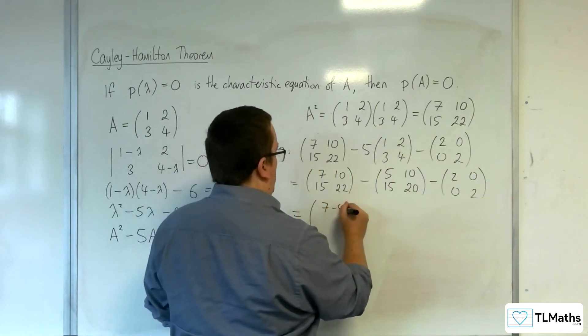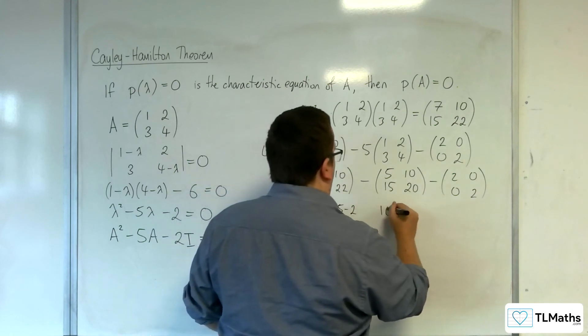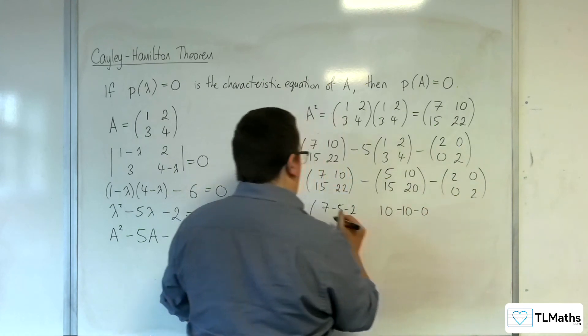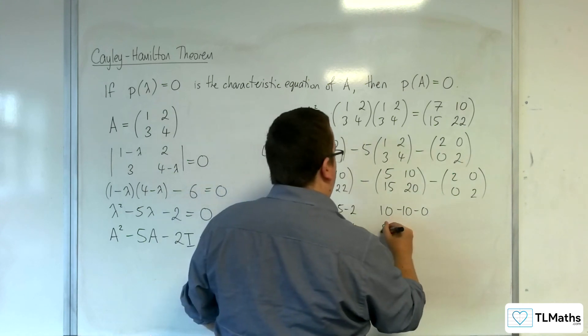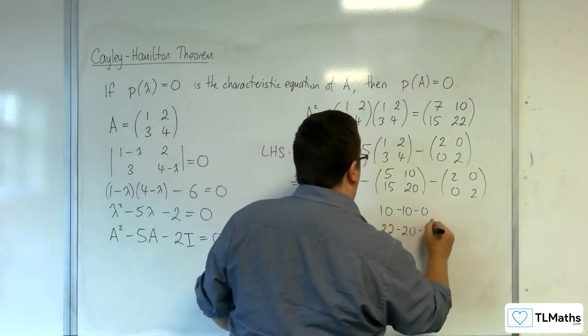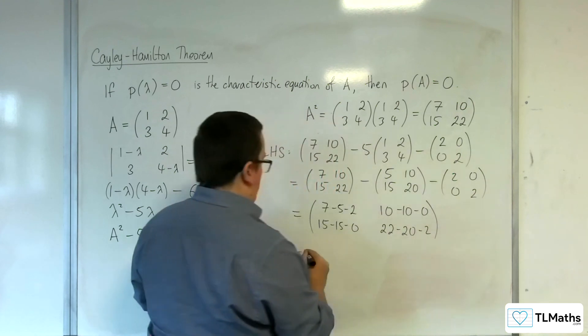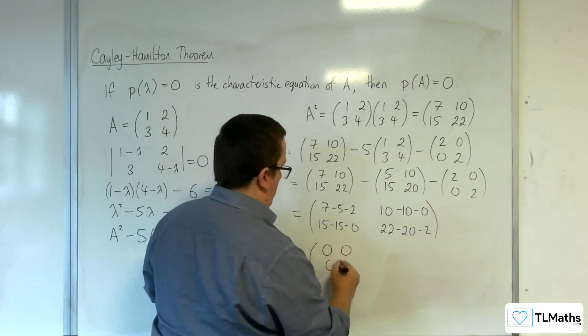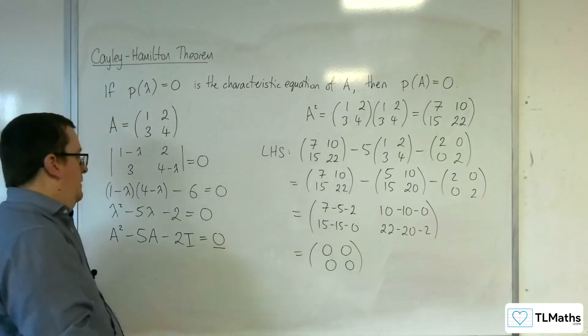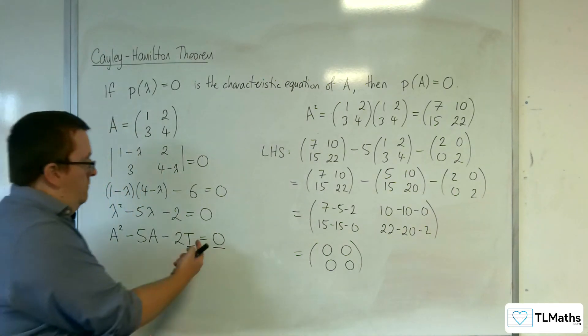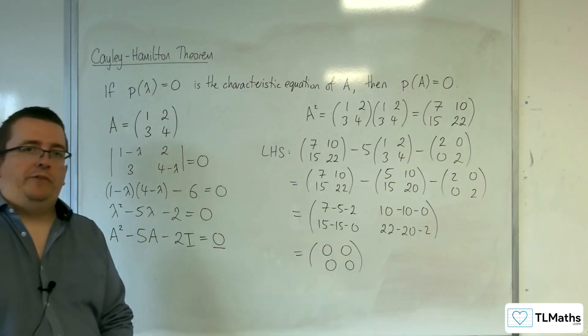So we've got 7, take away 5, take away 2. We've got 10, take away 10, take away 0. 15, take away 15, take away 0. And 22, take away 20, take away 2. Which, of course, is 0, 0, 0, 0. So really, I should write that, shouldn't I? Okay. Yeah. To represent the 0 matrix.